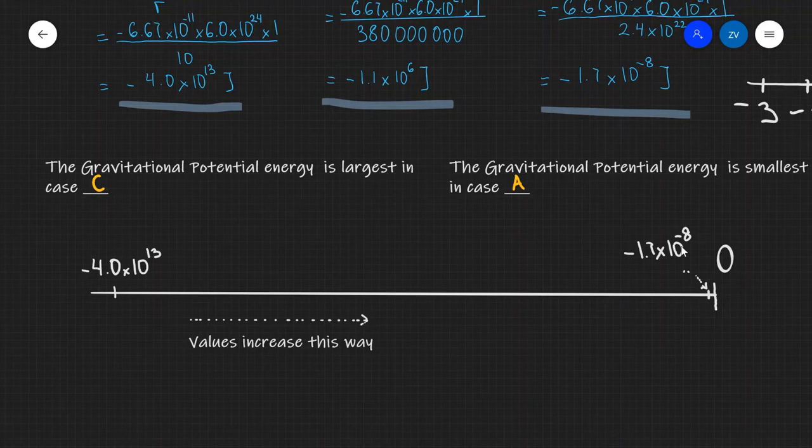So this is the reason why both the gravitational potential and the gravitational potential energy tends towards zero as the distance tends towards infinity.